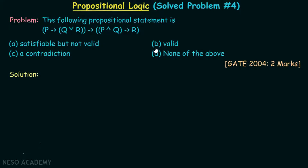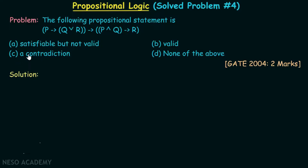And if we are not able to make this compound proposition false, then it is definitely valid. But we cannot stop there — if it is not valid, it may be satisfiable or it may be a contradiction. So we need to go one step further and try to make this compound proposition true for at least one truth value combination of p, q, and r. If we can make it true, option A is correct; if not, option C is correct.